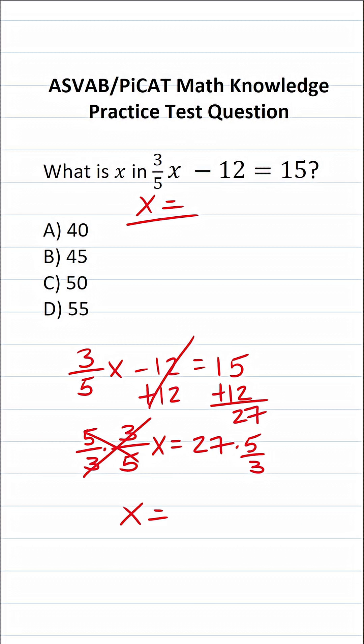Now, in order to simplify this on the right-hand side of the equals sign, I'm going to first write 27 as a fraction by placing it over 1. 27 divided by 1 is 27, and that enables me to cross-reduce.